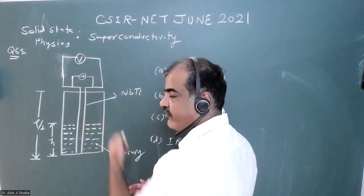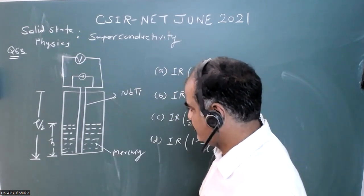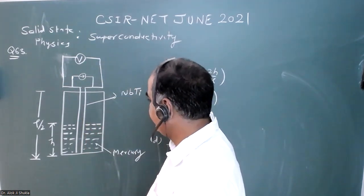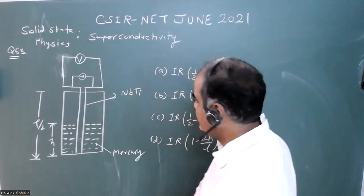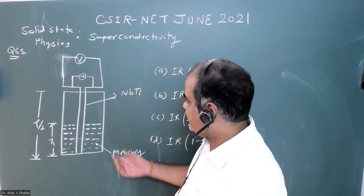across this wire they are flowing current and measuring voltage. This container is filled with mercury. They say in superconducting state, what will be the resistance? We know when we cool this wire, NbTi (niobium titanium), to 10 degree Kelvin,